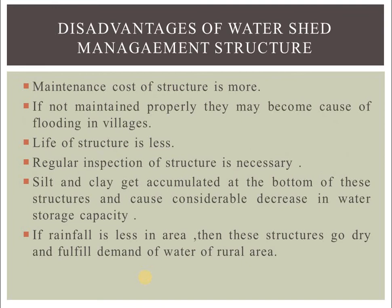This is all about watershed management. We have seen what is meant by watershed management, the different types of watershed management structures — KTVR, gabion wall, cement plug, farm pond — the detail of each structure, the uses, importance, and advantages and disadvantages of watershed management structures.